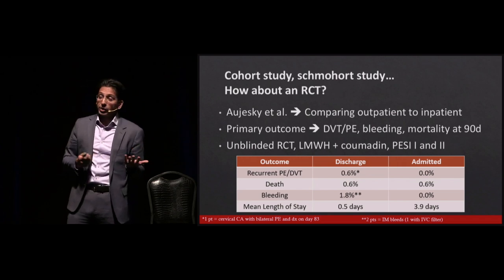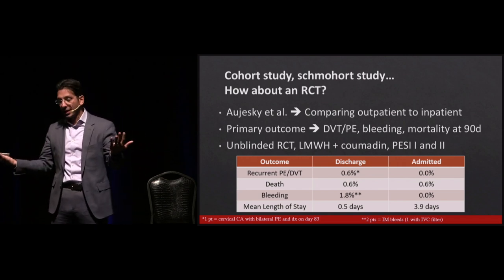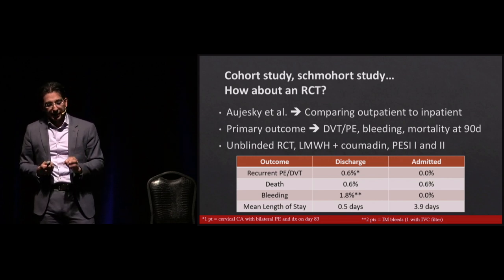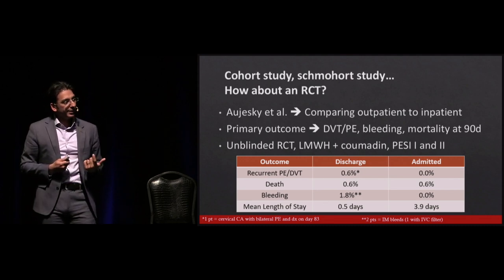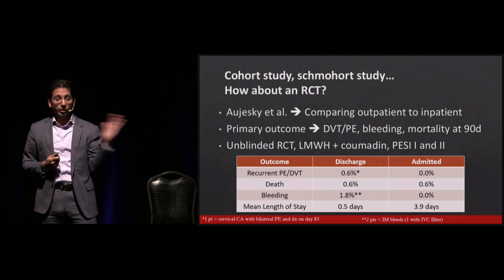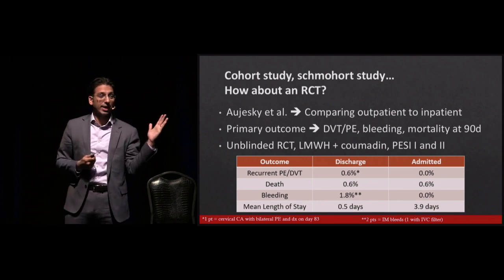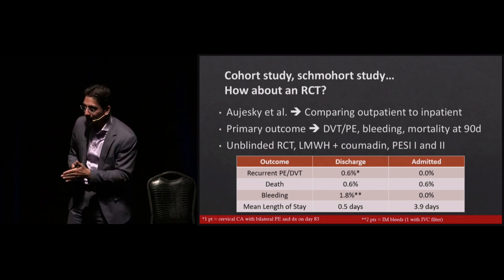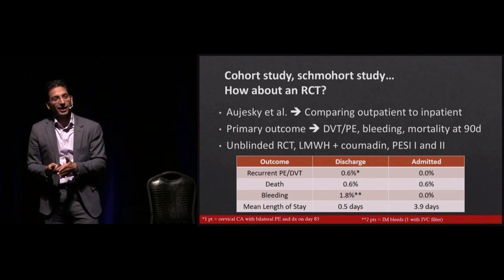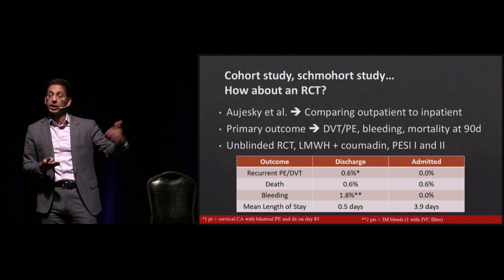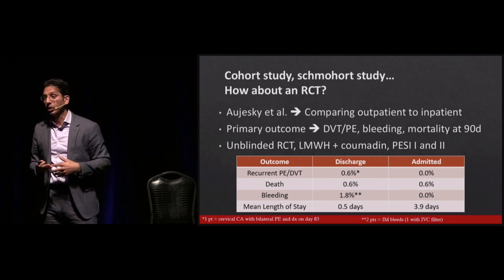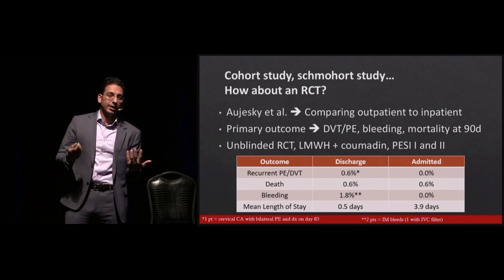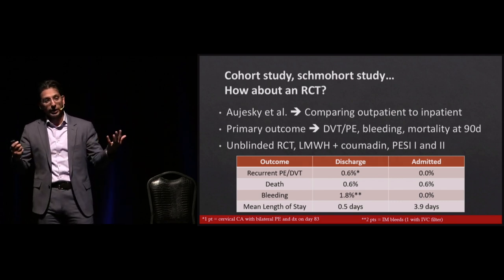Bleeding rate was 1.8% — two total bleeds, also not statistically significant. Both patients had intramuscular bleeds; one had an IVC filter in place. So really only one patient had an intramuscular bleed without being high risk. No statistical difference. As you'd expect, the mean length of stay was very different. In the outpatient group: 0.5 days. In the inpatient group, same-severity patients stayed four days — because once they're in, we do a bunch of stuff on them when we don't need to.